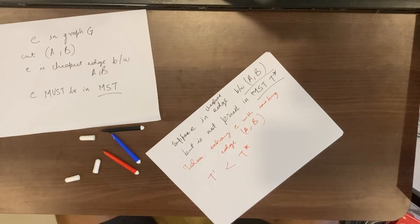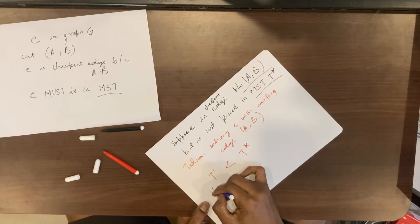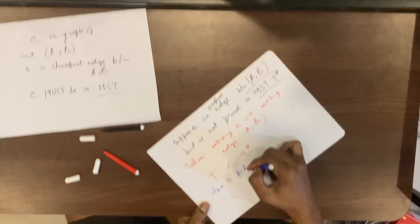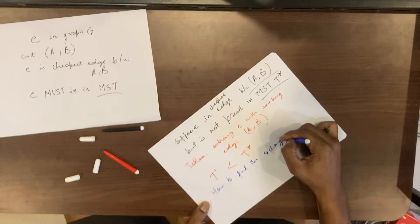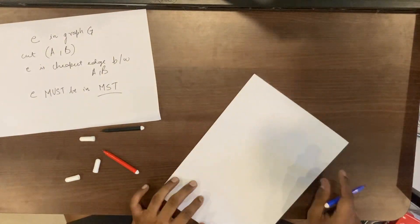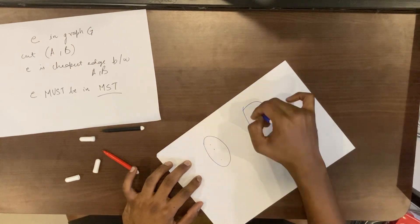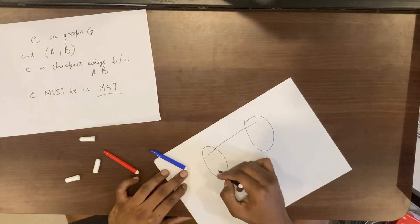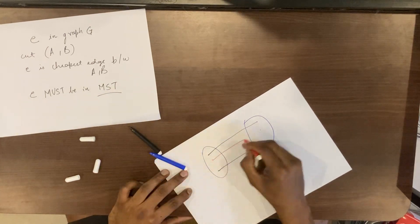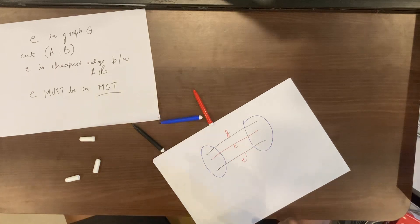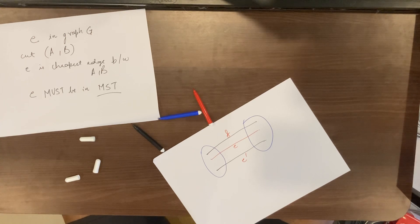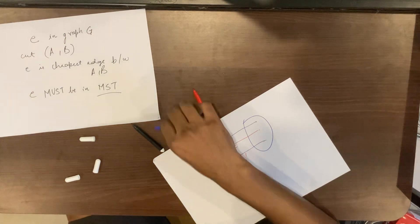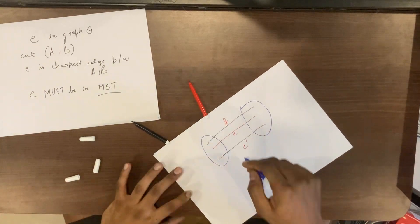But the question is how — how do we find this exchange edge? Let's say we have a graph with edges F, E prime, and E, where E is the cheapest.